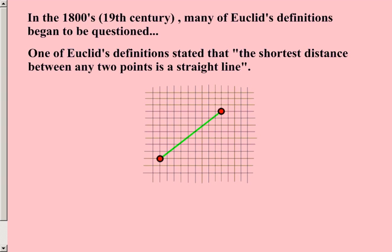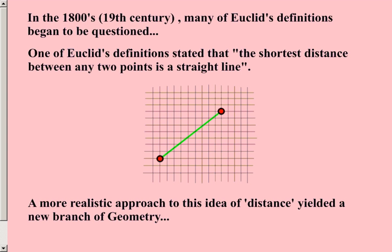At any rate, one of Euclid's definitions stated that the shortest distance between any two points is a straight line. The problem is that a more realistic approach to the idea of distance yielded a new branch of geometry. Anything that is not Euclidean geometry is simply referred to as non-Euclidean geometry. However, there are different disciplines within non-Euclidean geometry.